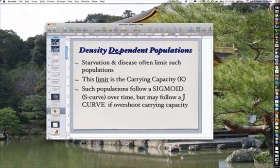Density-dependent populations face this situation. Starvation and disease often limit them. And this limit is called the carrying capacity. And such populations follow a sigmoid or S-shaped curve over time, but may follow a J-shaped curve if they overshoot the carrying capacity.